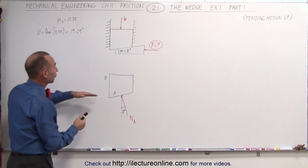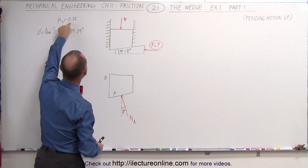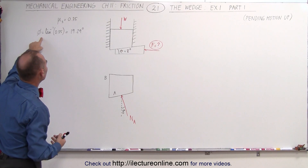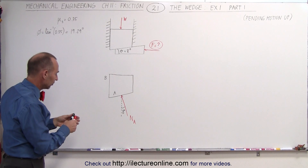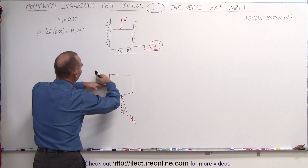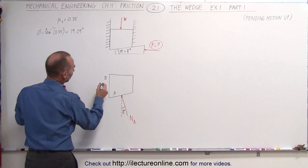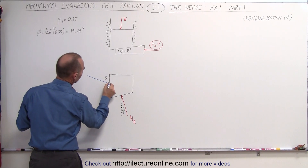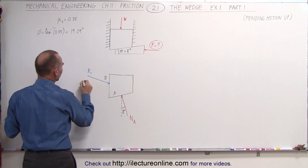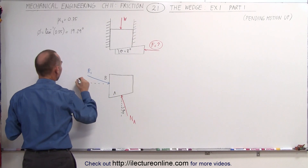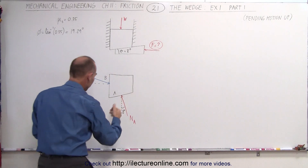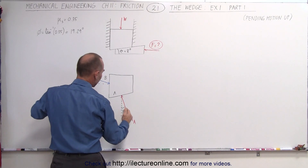Because there's friction on the bottom surface and on the side walls, both with a coefficient of friction of 0.35, we can calculate the friction angle: 19.29 degrees. The normal force pushes in one direction, and the reaction force R1 makes an angle of phi = 19.29 degrees with the normal. The reaction force at the bottom, R2, also makes an angle phi = 19.29 degrees relative to its normal.